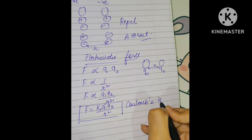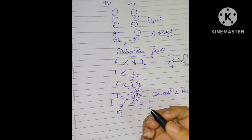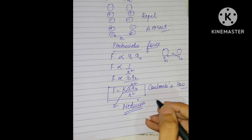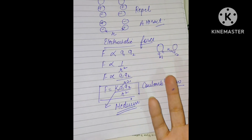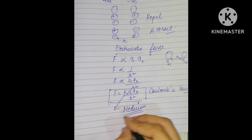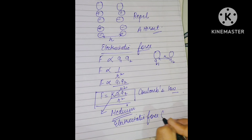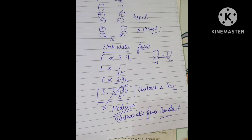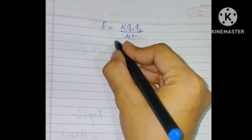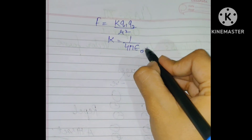The constant k tells you about the medium — it gives information about whether two charges are placed in vacuum or in some other medium like water. k is known as the electrostatic force constant, and its value is 1/(4πε₀), where ε₀ is the permittivity of free space.